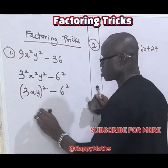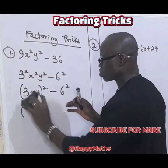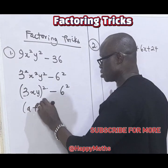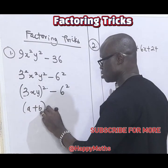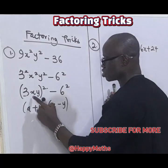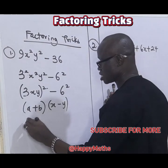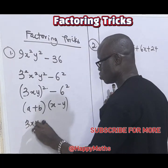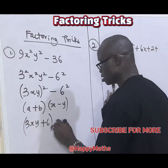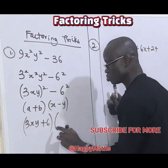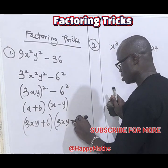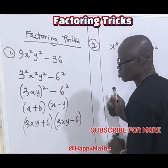Now, by implication, difference of 2 squares is a plus b, then a minus b. If this is possible, so let's take this as 3sy plus 6, into 3sy minus 6.